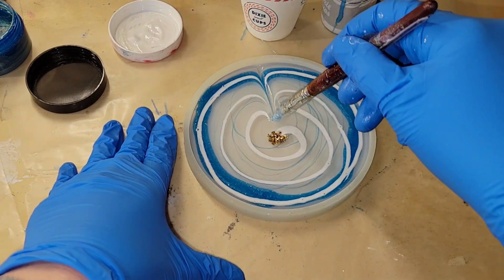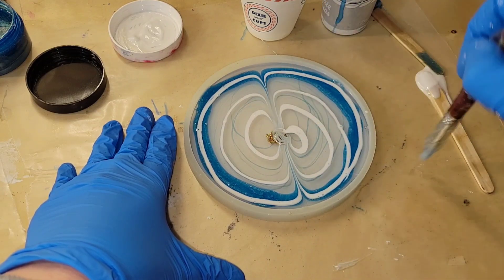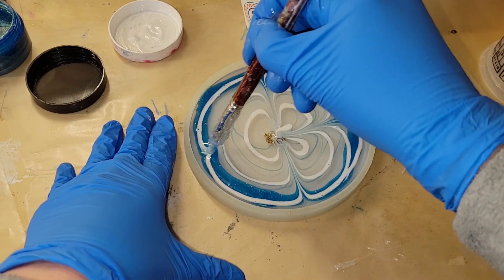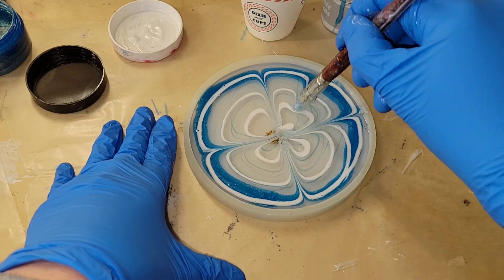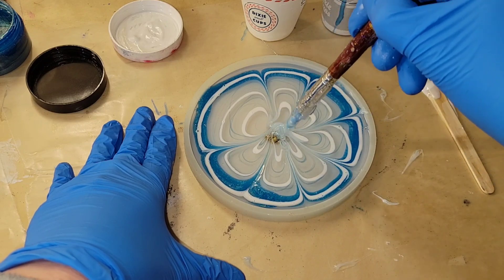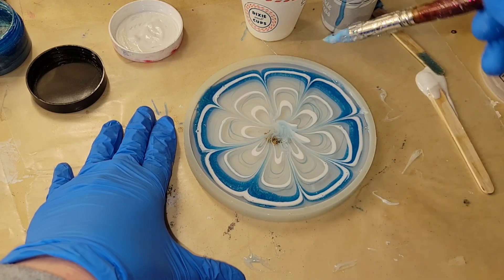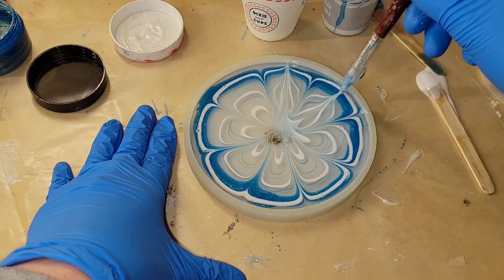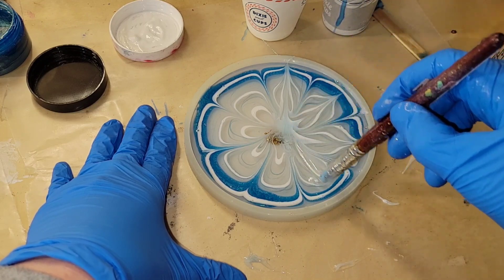Then I did a cinnamon roll swirl of my Angel White. Now I'm going to draw my flower petals. I didn't wait at all to draw my flower petals. When you heat up your resin, it is going to make it set up a little bit faster, so just keep that in mind. You have to work a little more quickly when you're heating up your resin.